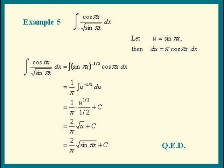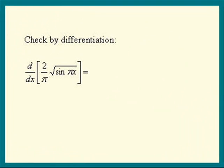Let's check by differentiating. Leave the 2 over π outside as a constant factor. Now let's differentiate the square root of sine πx. That's sine πx to the half power. Apply the power rule for differentiating.